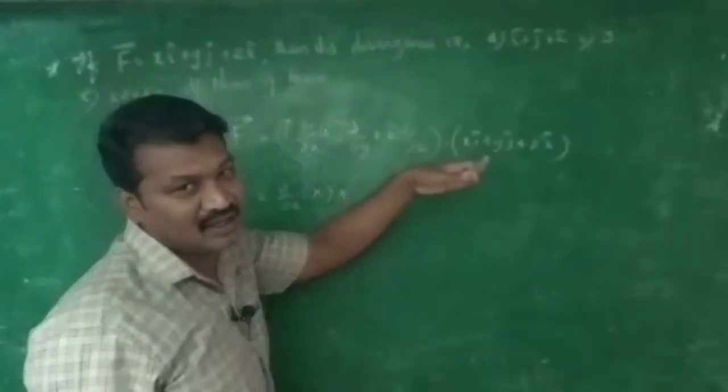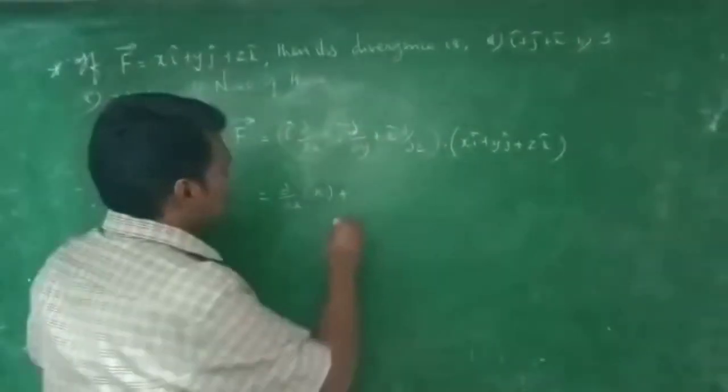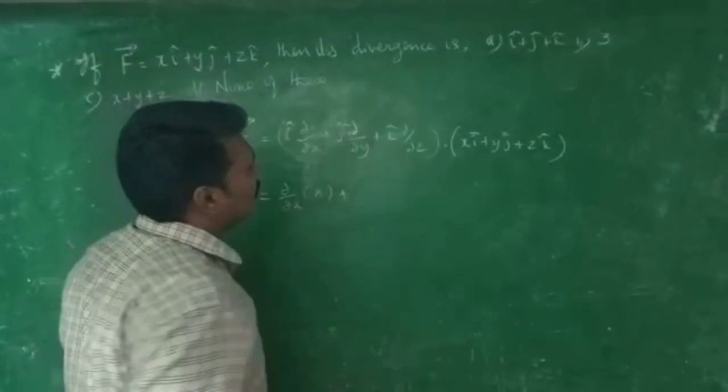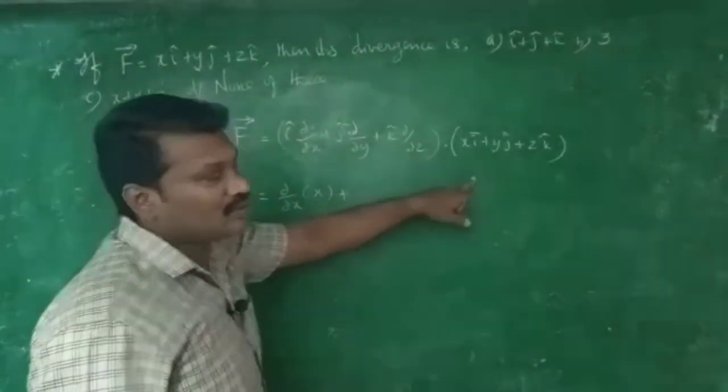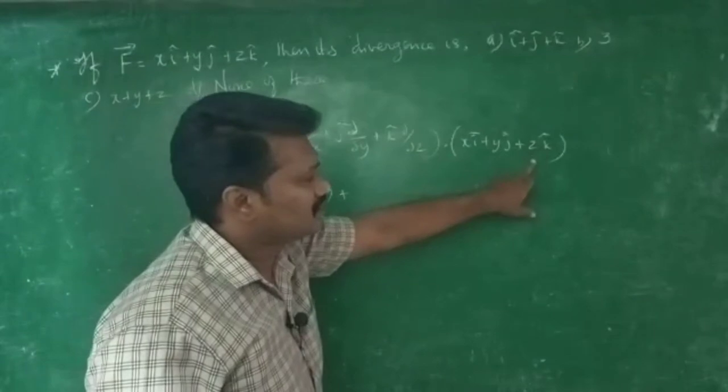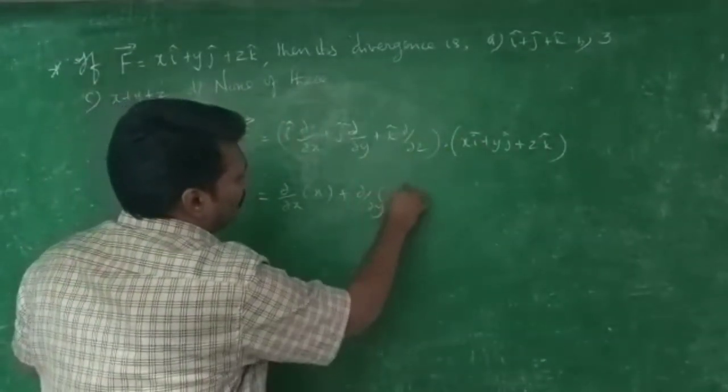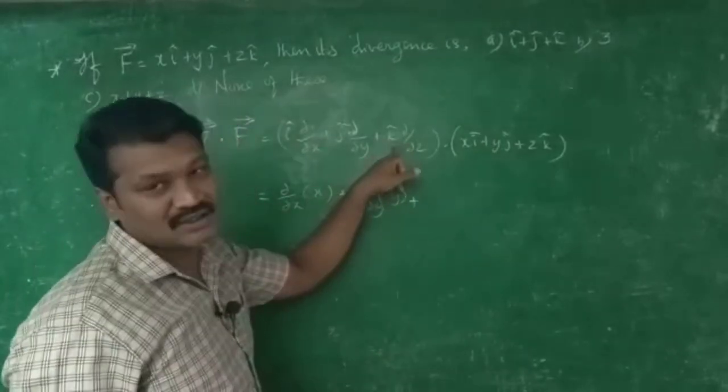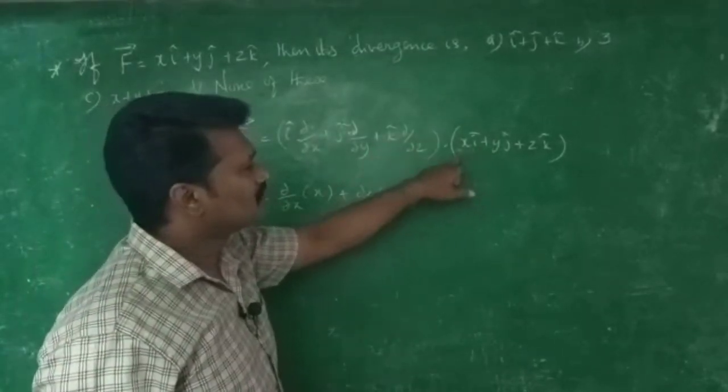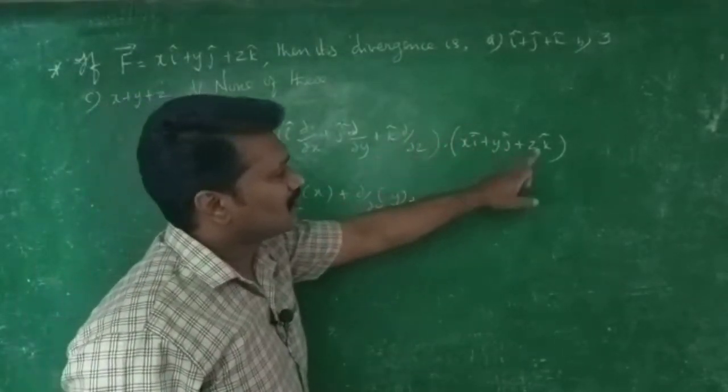i dot k as you can see is zero, and then k dot i is zero, k dot j is zero, k dot k is one.